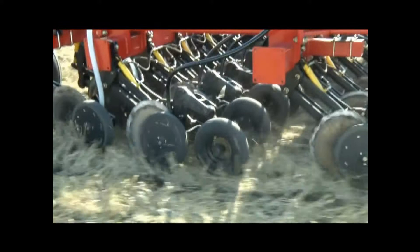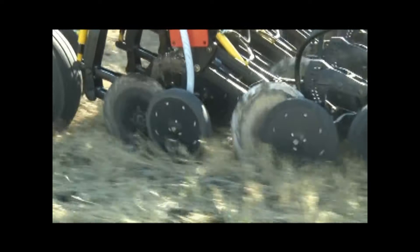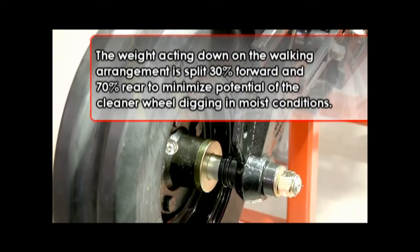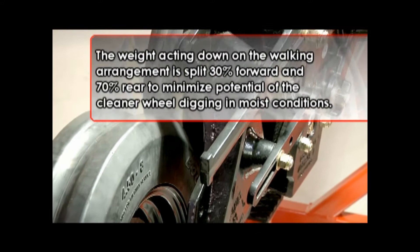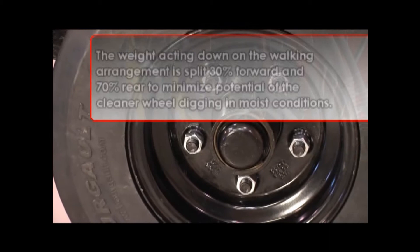Bourgault has addressed the sensitivity in the 3710 opener by designing the packer wheel and cleaner wheel as a walking assembly, dampening the negative effects caused by traveling over debris and existing furrows in the seed bed. The weight acting down on the walking arrangement is split 30% forward and 70% rear to minimize potential of the cleaner wheel digging in moist conditions.